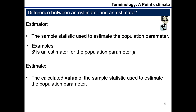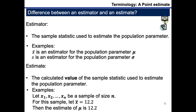An example would be X bar, which is the sample mean and it's an estimator for the population parameter mu. Another example would be S, which is the sample standard deviation, and it's an estimator for the population parameter sigma. So if we have a sample of size n and from this sample we obtain a sample mean X bar of 12.2, then we can report that the estimate of the population mean is 12.2.